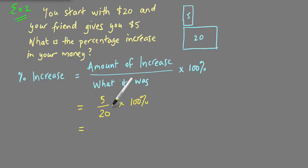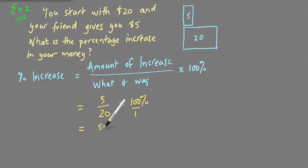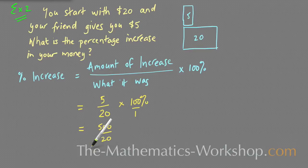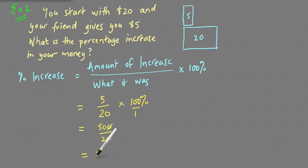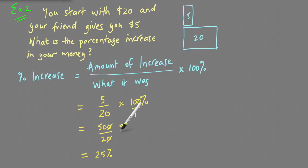The formula is: the amount of the increase over the original amount, then multiplied by 100%. So it's 5 over 20 times 100 over 1. Tops together: 5 times 100 is 500; bottoms together: 20 times 1 is 20. Cross off a zero from each — 50 divided by 2 — and the answer is 25. The unit is percent because you multiplied by 100%, so the percentage increase is 25%.